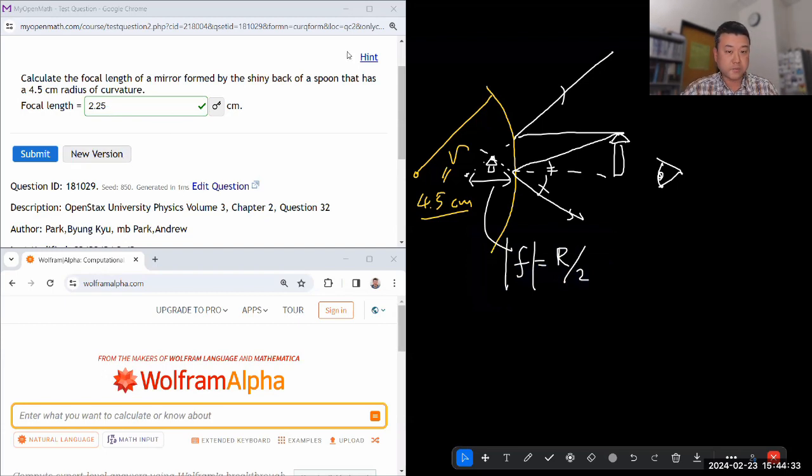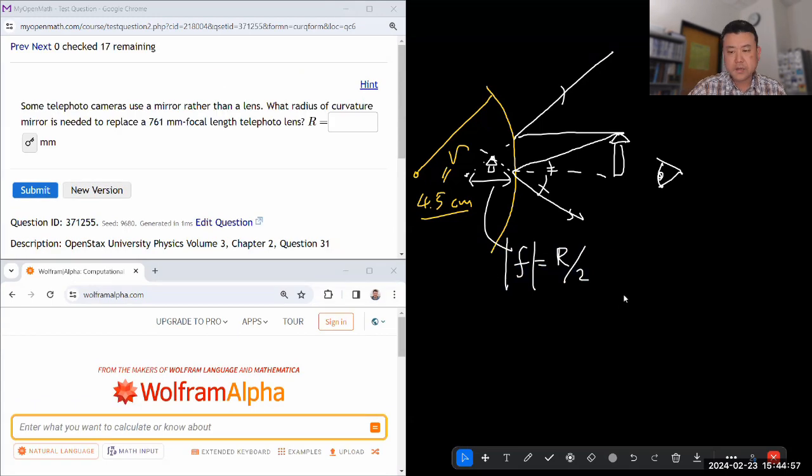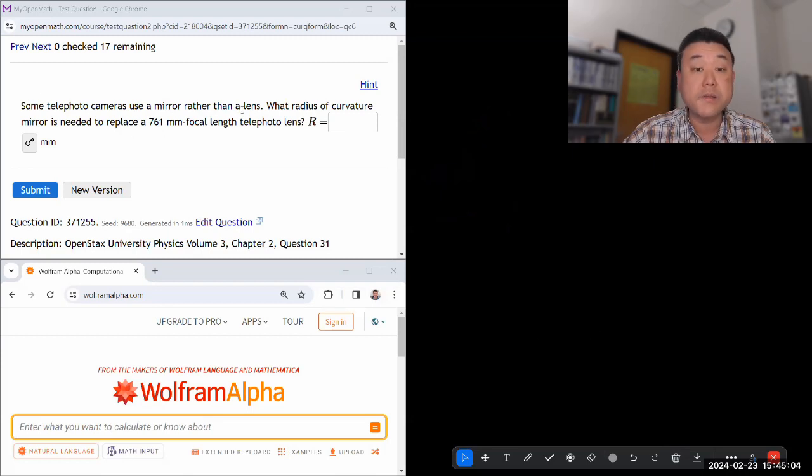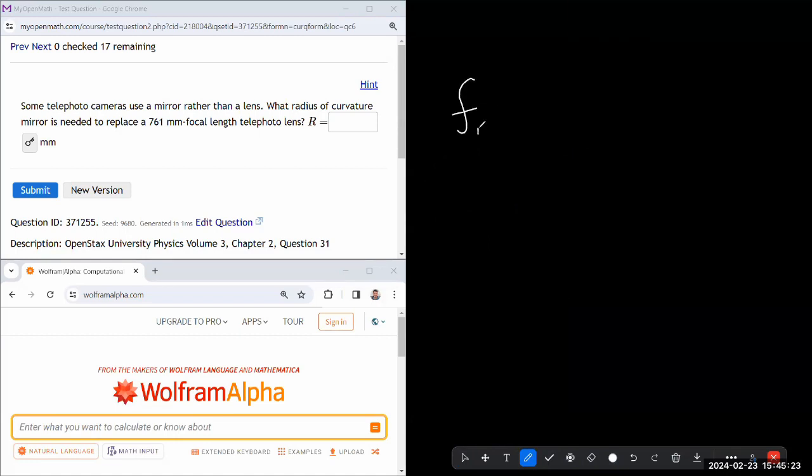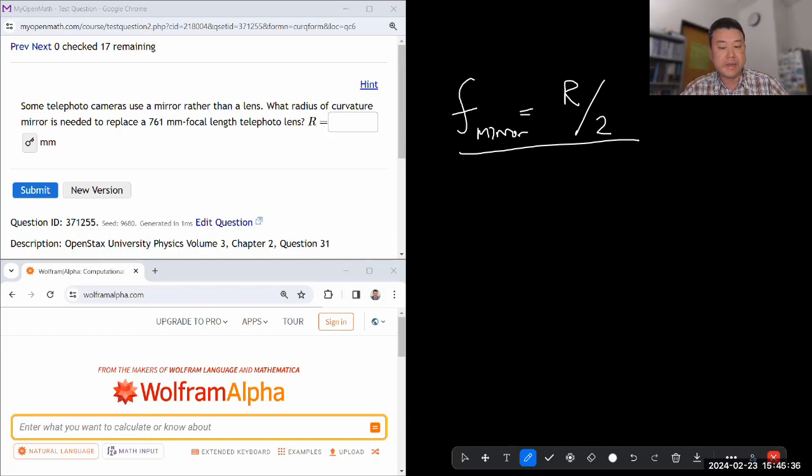Okay, let's get to the third and the last question in this set. And let's look at this question. I don't think I needed these drawings anymore. So let me clear it. It says some telephoto cameras use a mirror rather than a lens, right? Telephoto cameras, cameras, I'm not sure, telescopes, definitely. What radius of curvature mirror is needed to replace this focal length of telephoto lens. Oh yeah, that's kind of simple application of that formula that I've been citing. A focal length of a curved mirror is its radius of curvature divided by two. So if our focal length is that 761, then for R, I multiply that by two. I think I can do that in my head. Fifteen twenty two millimeters, hopefully.